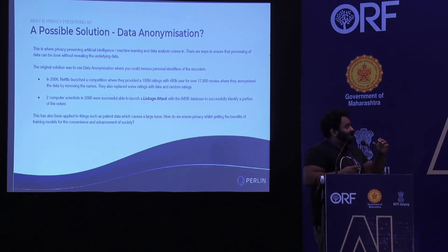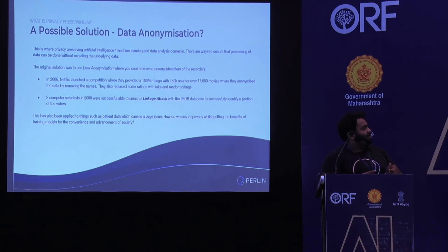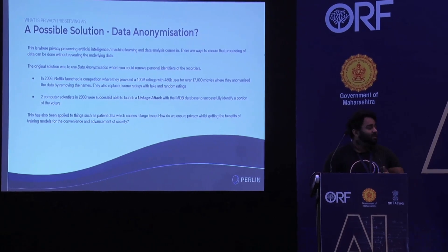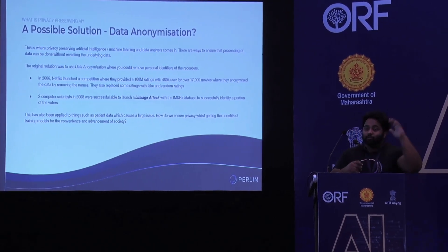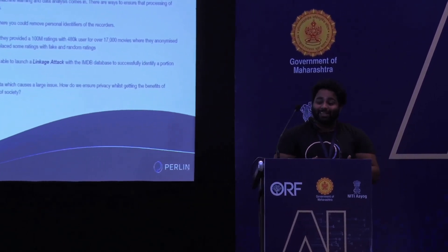But here's a story. In 2006, Netflix released a huge data set on movie ratings — 100 million records, about 17,000 movies, 480k users. What they did was remove the names from all the data sets and added some random data here and there. But in 2008, two computer scientists were able to launch something called a linkage attack, simply by connecting IMDB, an open movie rating website, to the Netflix data set and identifying people who made those movie ratings.